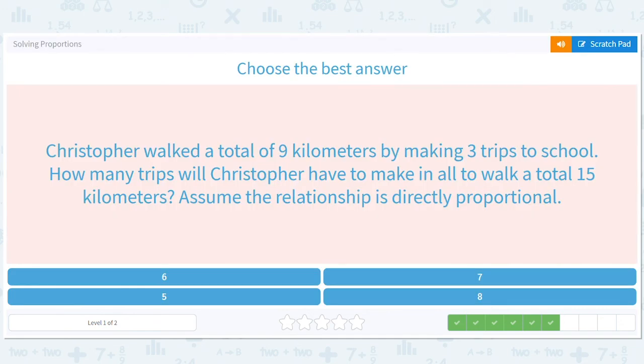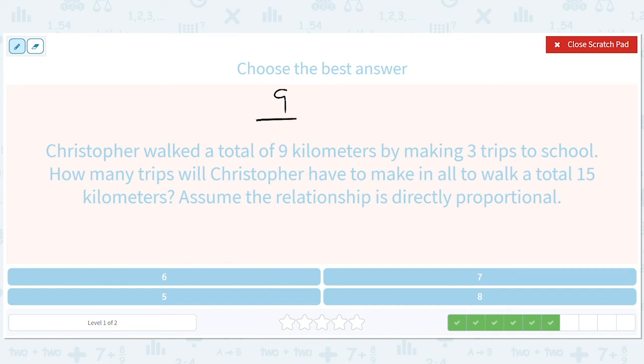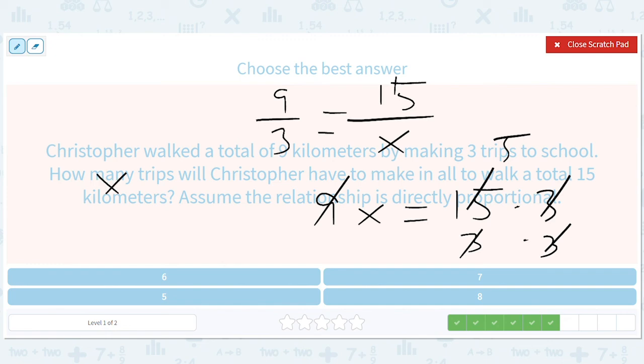Christopher walked nine kilometers. Three kilometers. Three trips. How many trips? 15 kilometers. Nine x equals 15 times three. This is three times three. So we can divide by three and three. And get x equals five. Because nine is three times three. So I broke up the nine and divided each of the two things on the right by three. So x equals five.